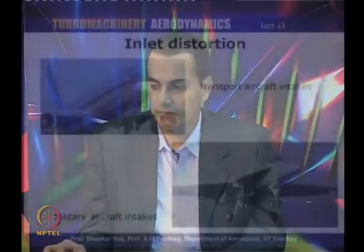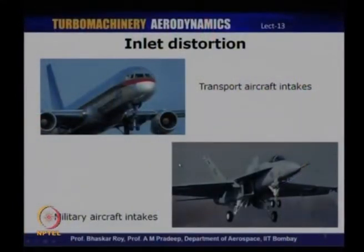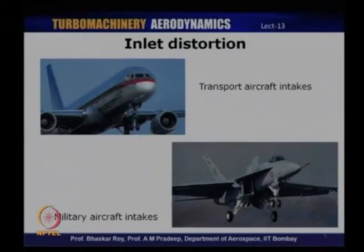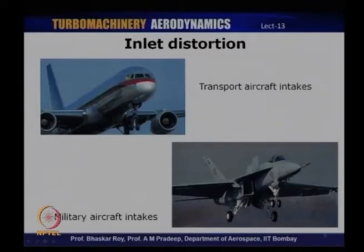Let us look at two different types of aircraft and their intakes. A normal transport aircraft has wing-mounted engines with a very short intake — the problem with distortion is not as severe here. There is definitely a distortion issue even for such aircraft, but it is much more severe for military aircraft, which have an entirely different type of intake mainly because the engine is mounted within the fuselage.